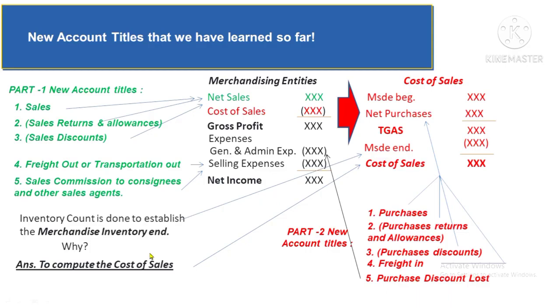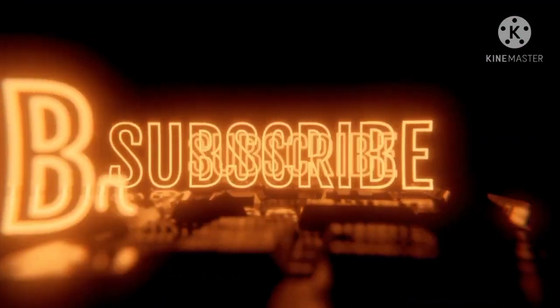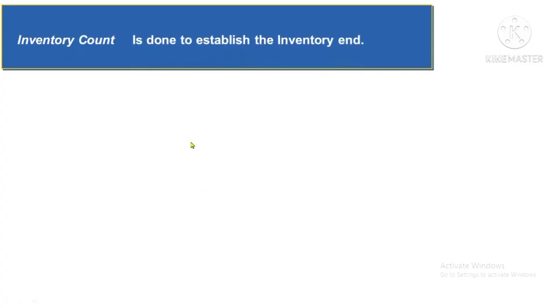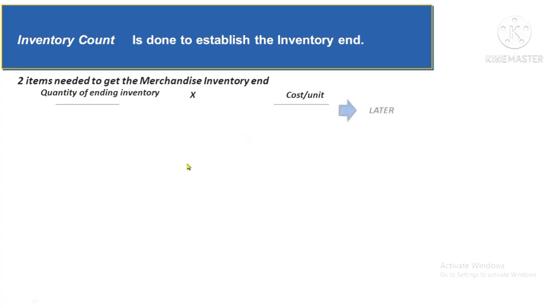Let's compute the merchandise inventory ending. Inventory count is done to establish the ending inventory. There are two things needed to get the ending inventory value: Number 1, the quantity of the inventory, and Number 2, the cost per unit. Let's first discuss the quantity, and cost per unit will follow.